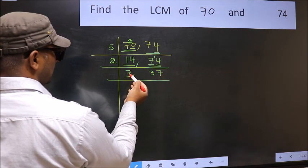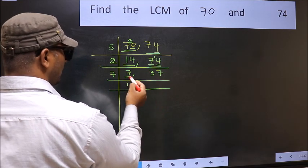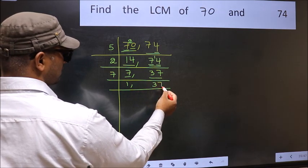Now here we have 7. 7 is a prime number so 7 once 7. The other number 37 is not divisible by 7 so you write it down as it is.